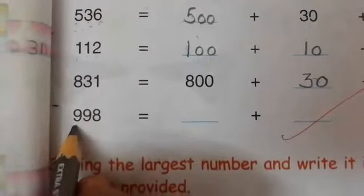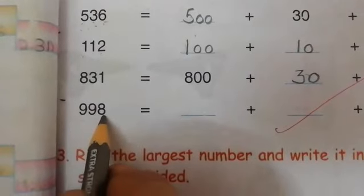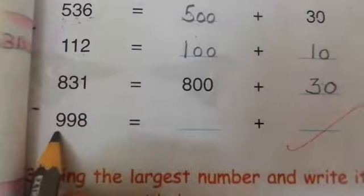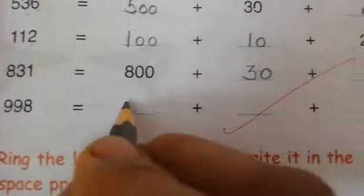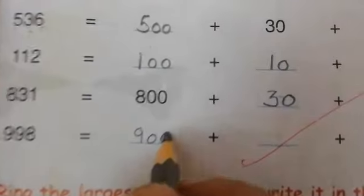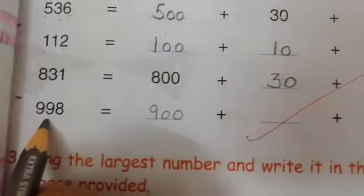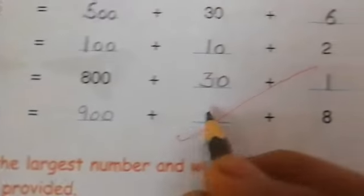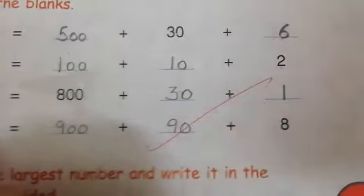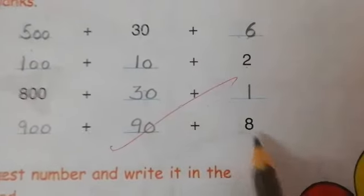Next number is 998. How many hundreds are there? 9. Then we will write here 900. How many tens are there? 9. 9 tens means 90. And how many ones are there? 8. And 8 is written here.